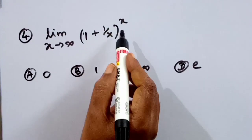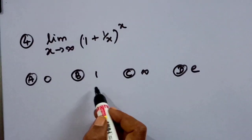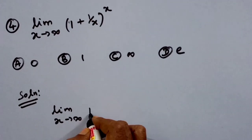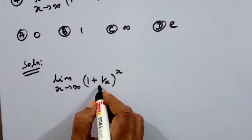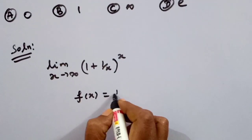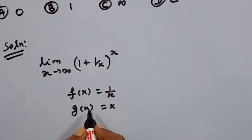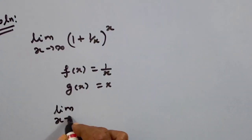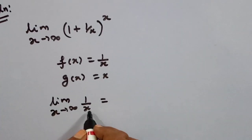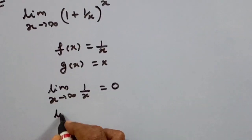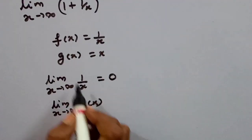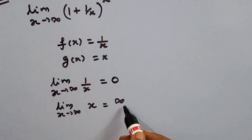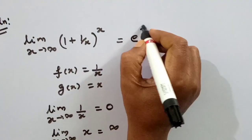Now the fourth problem: limit as x tends to infinity of (1 plus 1 by x) the whole power x. We have four options: first is 0, second is 1, third is infinity, and last is e. Let f of x equal 1 by x and g of x equal x. As x tends to infinity, f of x equals 1 by infinity which equals 0, and g of x tends to infinity. The limit equals e to the power of f of x times g of x.